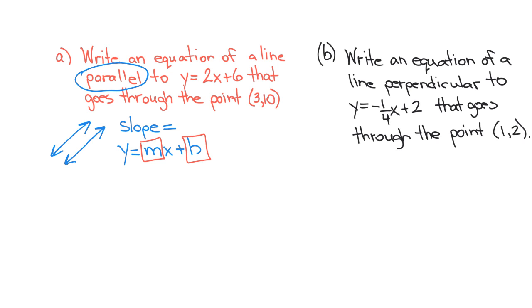So in this problem, I know my new line has to have a slope that's parallel to the existing line. So that means my new slope is going to be equivalent to that slope. So my slope will be 2.